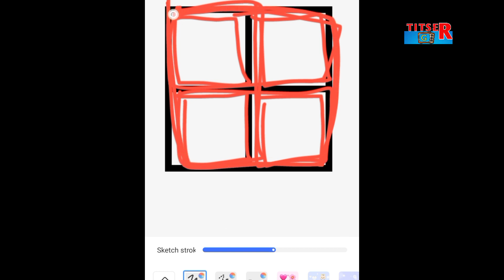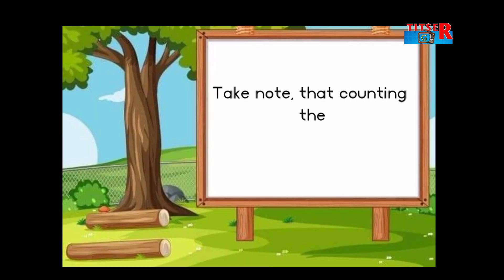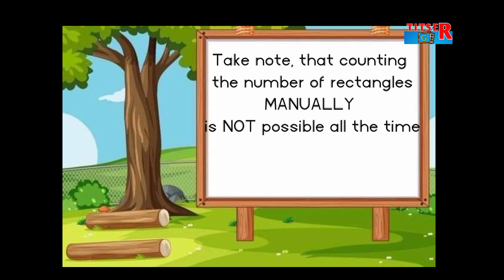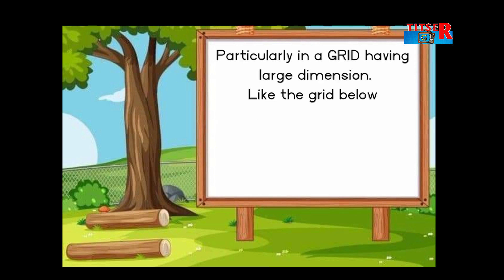By counting manually we found that we have nine rectangles in a 2×2 grid. Take note that counting rectangles manually is not always possible, particularly in a grid having large dimensions.